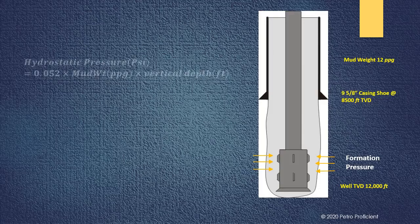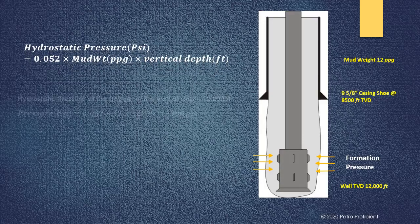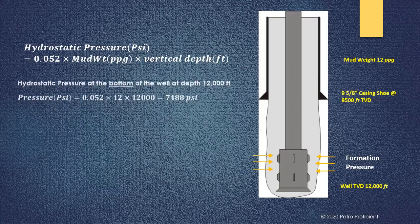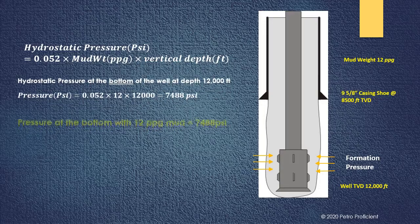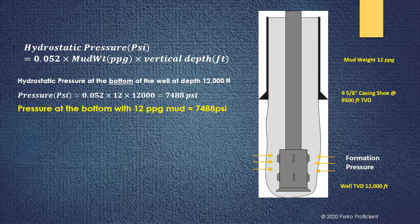Hydrostatic pressure equals 0.052 times mud density in ppg, times depth in foot. Hydrostatic pressure at the bottom of the well is 0.052 times 12 times 12,000 feet which equals 7,488 pounds per square inch.